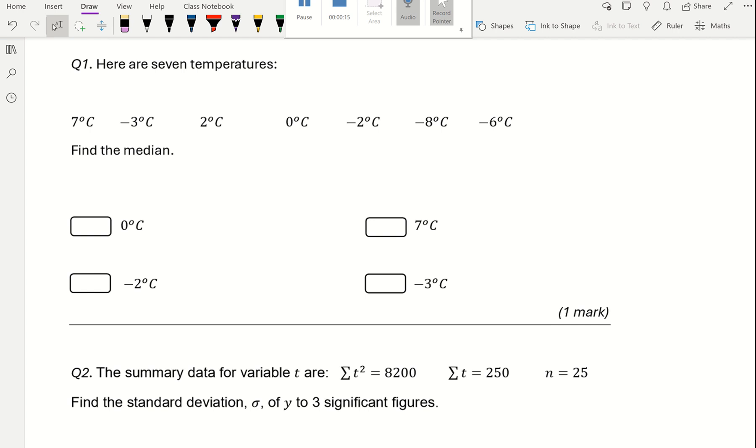The first question says find the median. The first thing you need to do is rearrange the data and make sure that we start from the smallest number to the biggest number and cross them off so that you don't miss anything out.